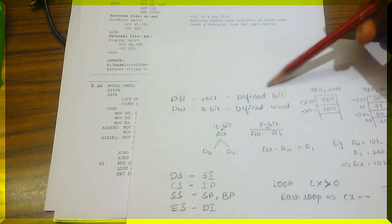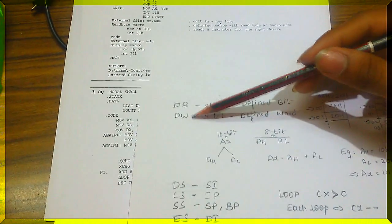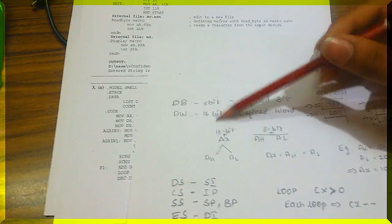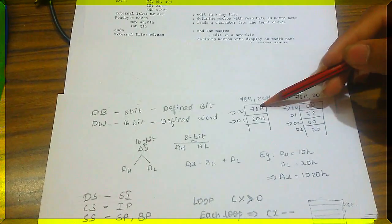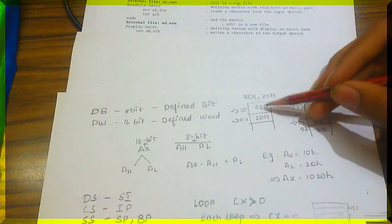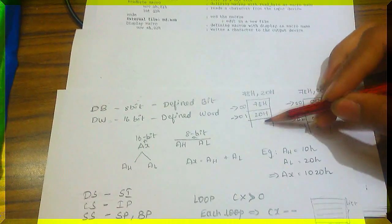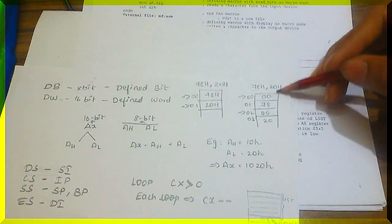DB means Defined Byte — it can store up to 8 bits. DW means Defined Word — it can store up to 16 bits. In the processor each location holds 8 bits, so DB stores each value in 8 bits and every new value will be stored in each and every location. In the case of Defined Word, it takes 16 bits.